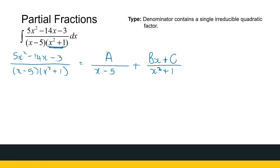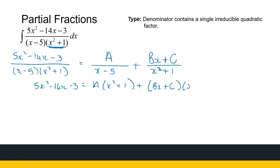My numerator on the left-hand side is 5x squared minus 14x minus 3. My numerator on the right-hand side will be A times (x squared plus 1) plus (bx plus c) times (x minus 5). We treat it exactly the same way as we did the previous ones. The algebra just becomes a little bit more messy, but it really isn't much to worry about.